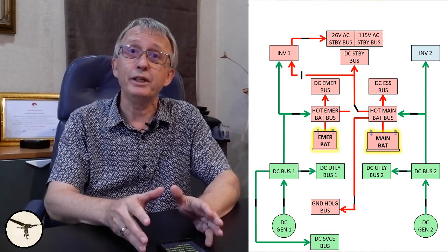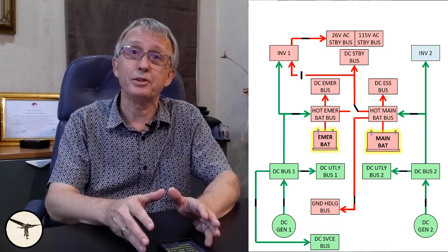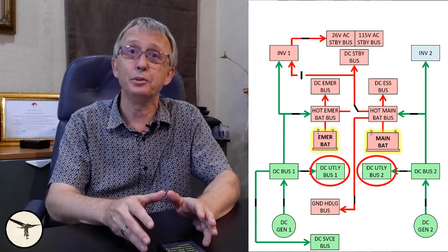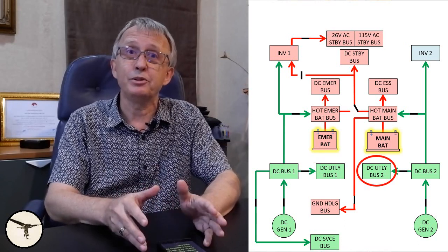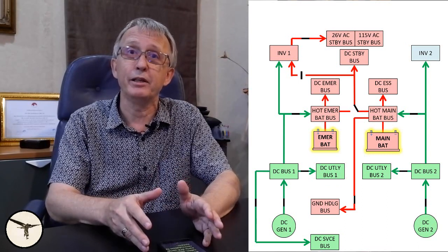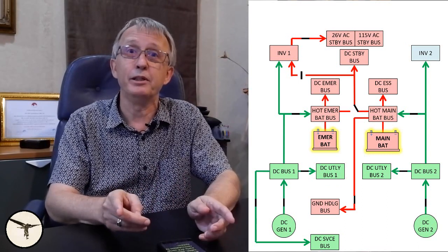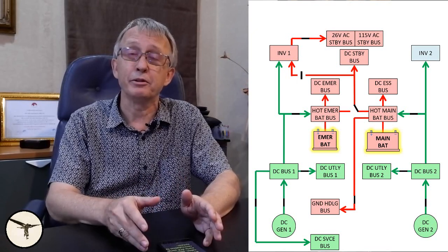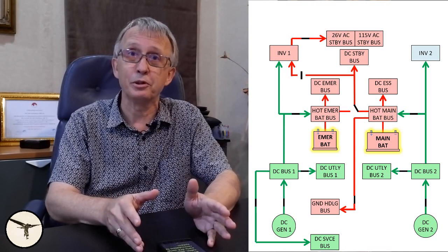Then we have three not so important bus bars: the DC service bus and utility bus 1 and 2. They provide light to the cabin, they power the toilet flushing, but not on the earliest 42A variants, and power the recirculation fans in the air conditioning system. It's all about comfort.